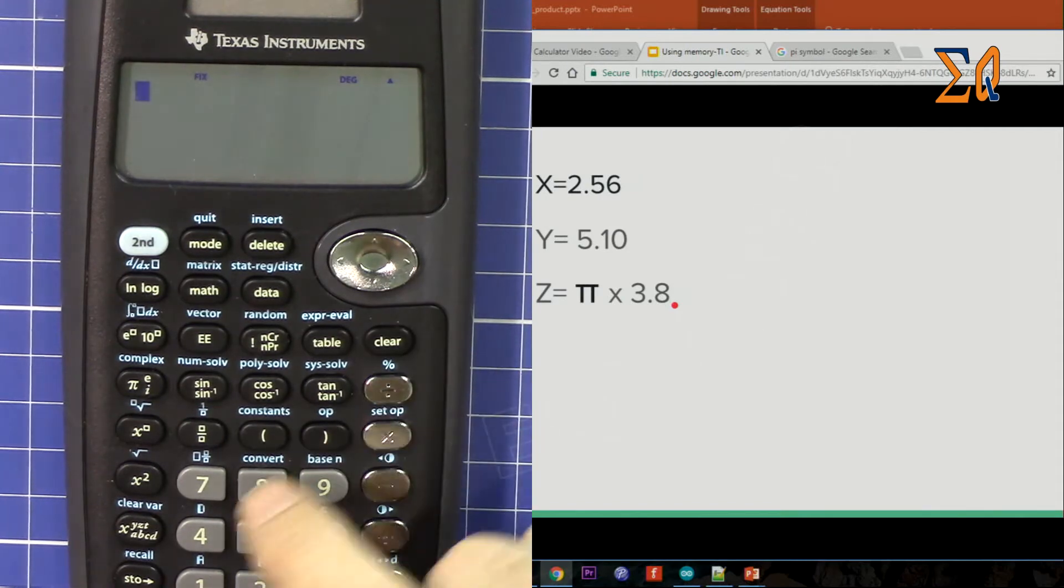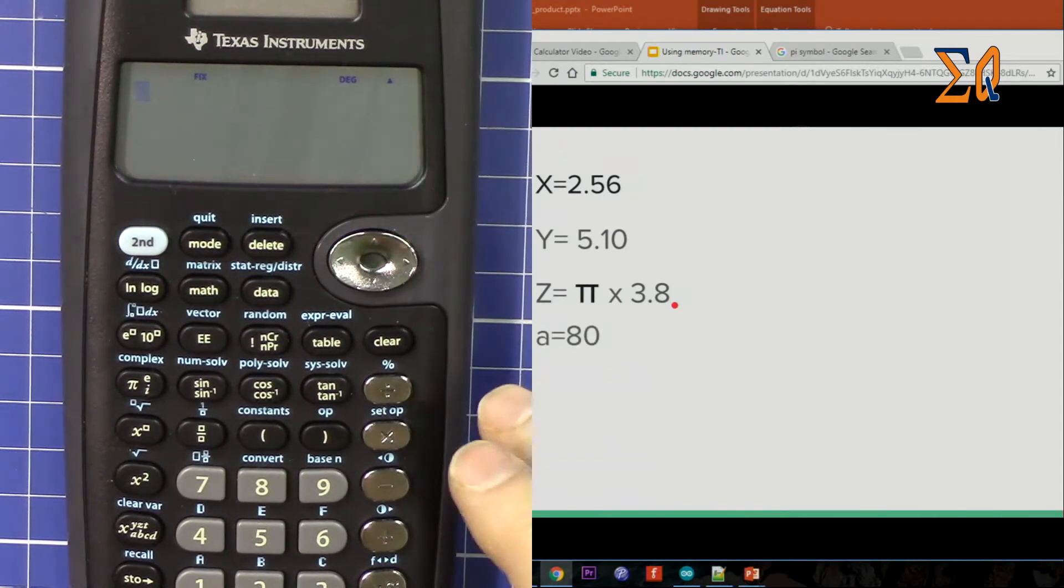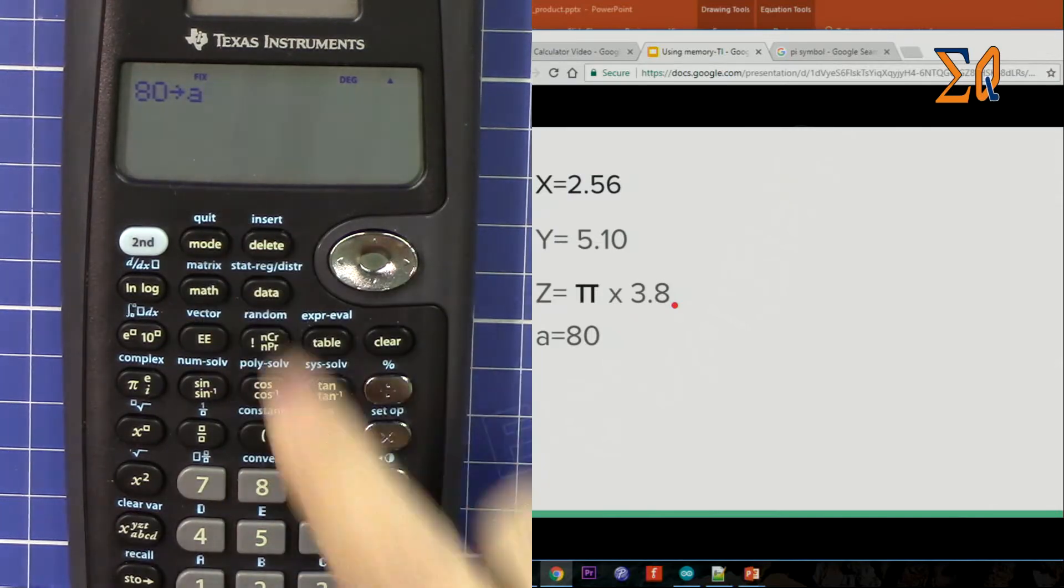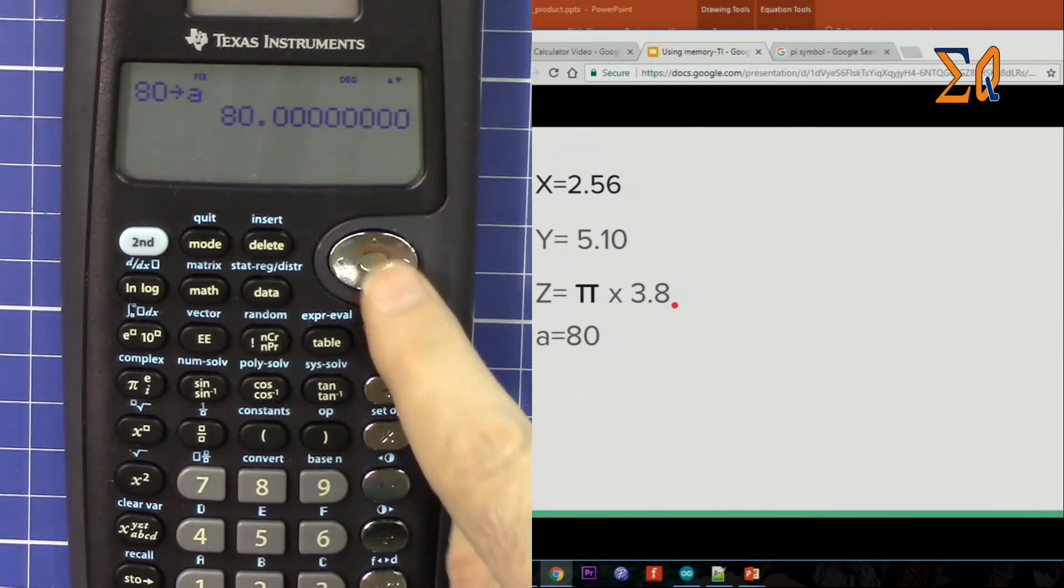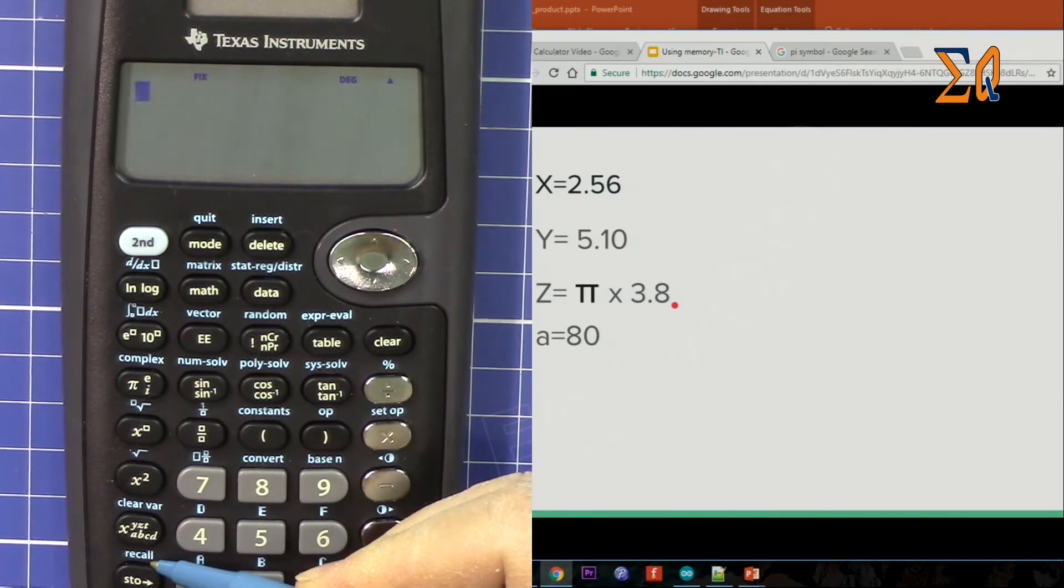Now let's put 80 into A. 80, stores, press it until you see A. So 80 is there. I have fixed number.